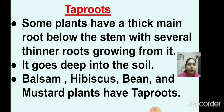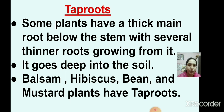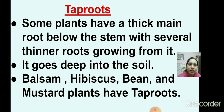Now about tap roots. Some plants have a thick main root below the stem with several thinner roots growing from it. It goes deep into the soil. Examples of tap root plants are balsam, hibiscus, bean, and mustard plants.